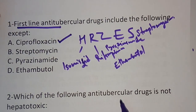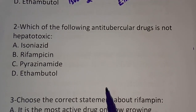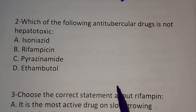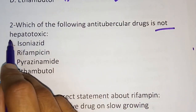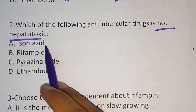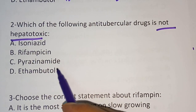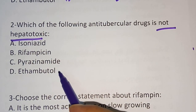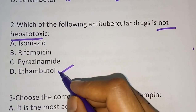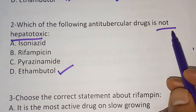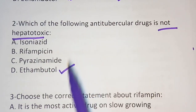Second question: which of the following anti-TB drugs is not hepatotoxic? Option A: isoniazid, option B: rifampicin, option C: pyrazinamide, option D: ethambutol. The correct answer is ethambutol — ethambutol is not hepatotoxic.